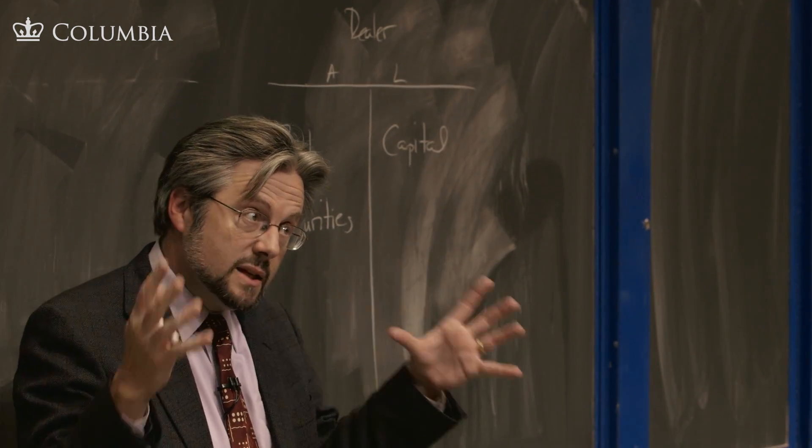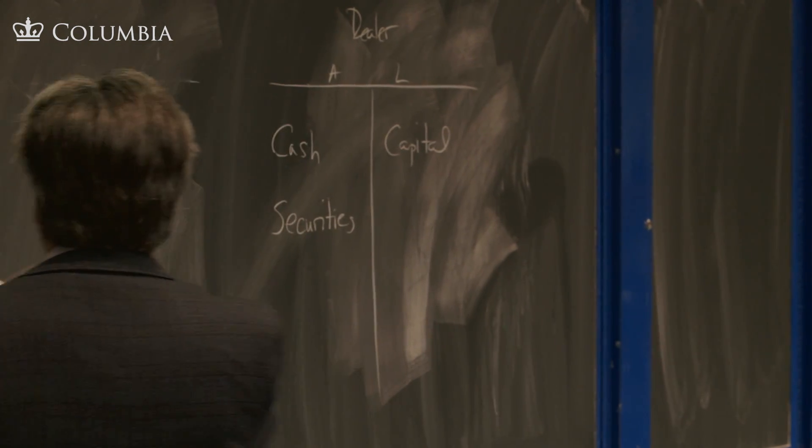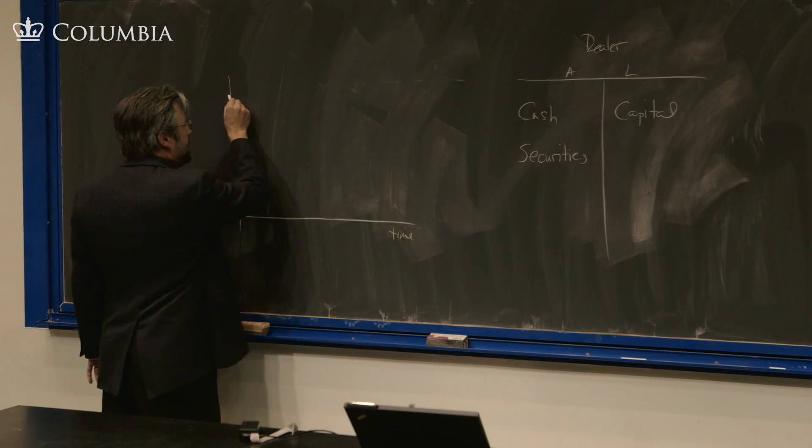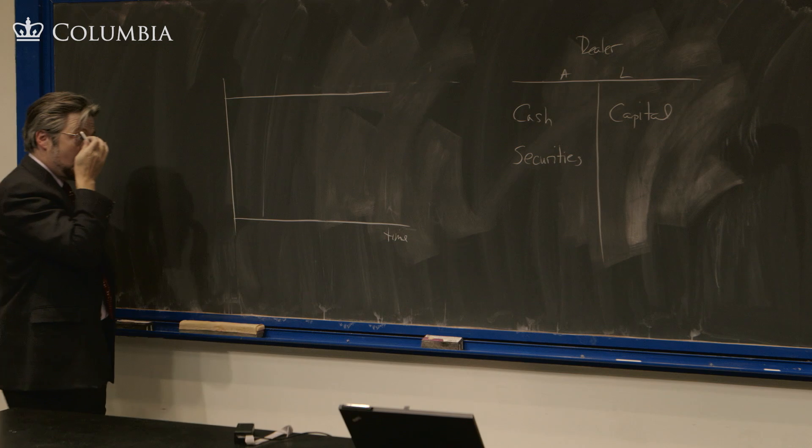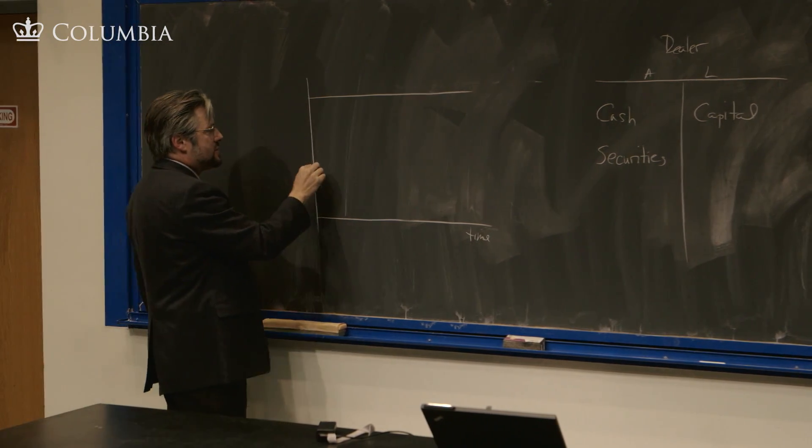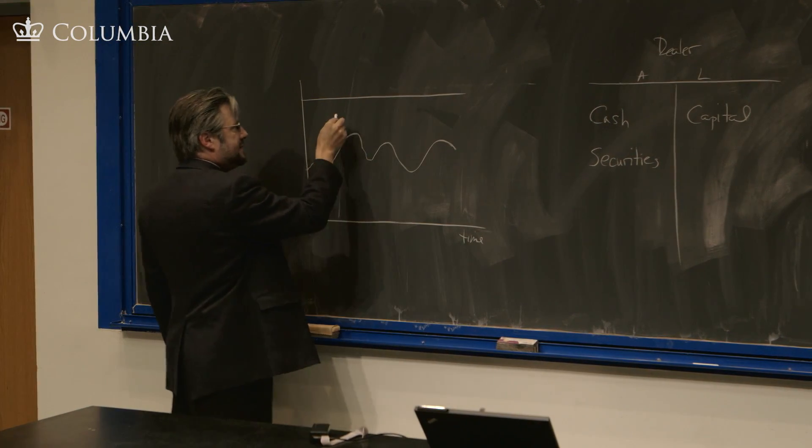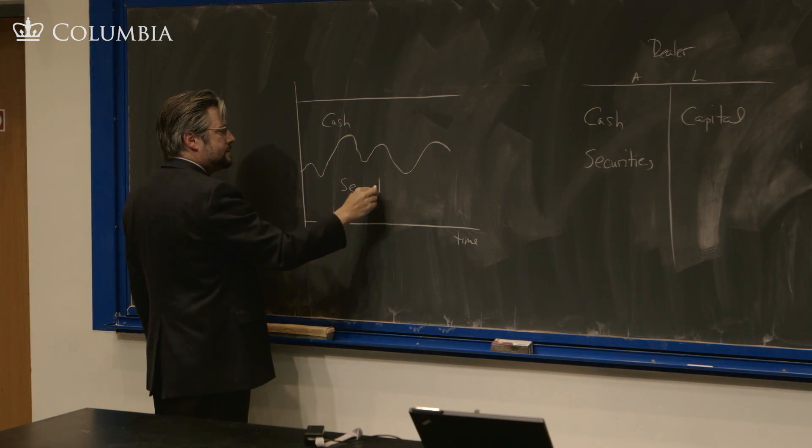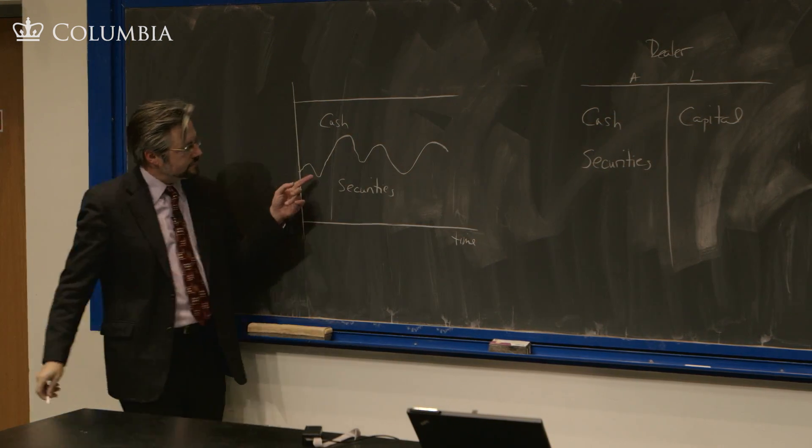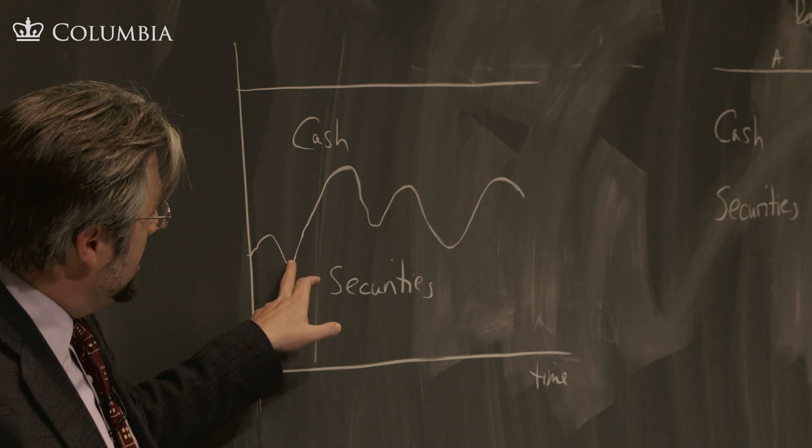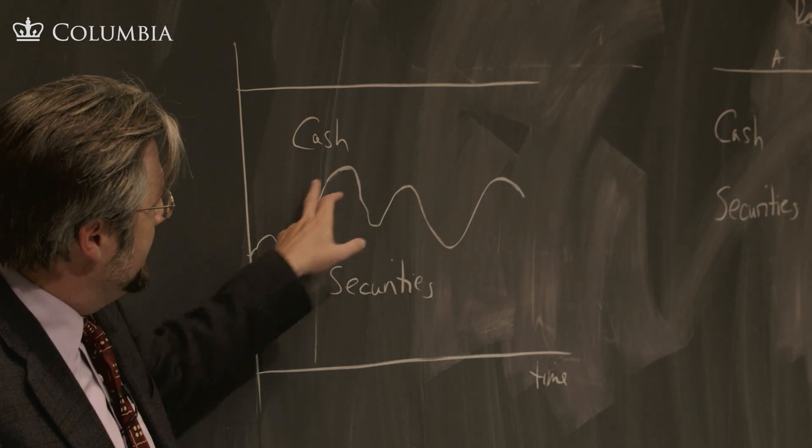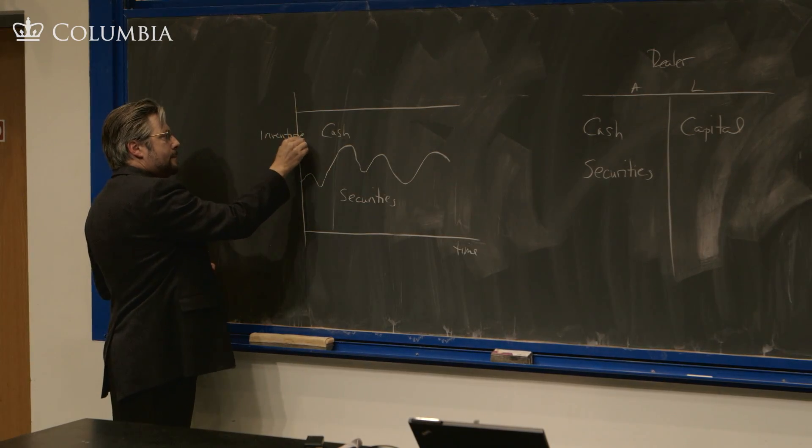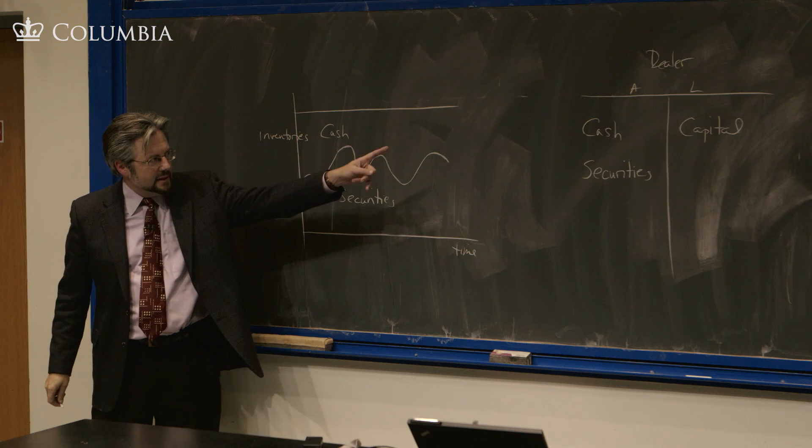That's a building intuition about how dealers work. So if you think about this dealer over time, if their capital is sort of fixed there, you can think of their inventory fluctuating like this, where this is the amount of cash and this is the amount of securities. So what I'm showing here is this line - this isn't price here, this is your inventories. This is your balance sheet here.